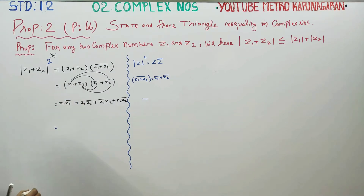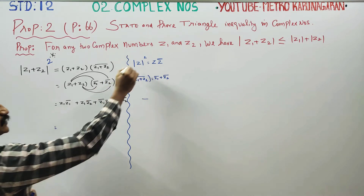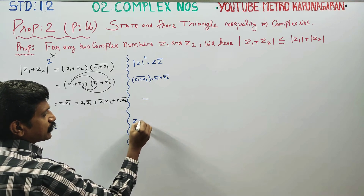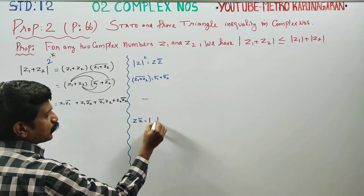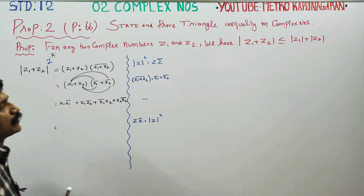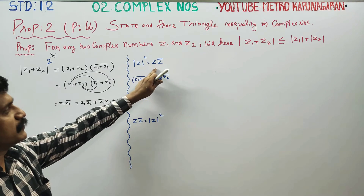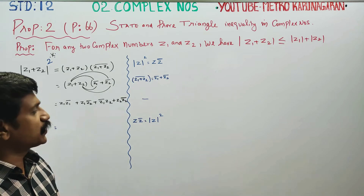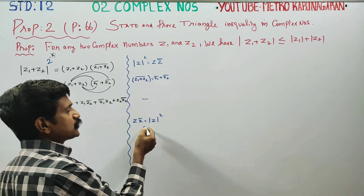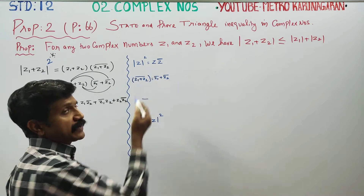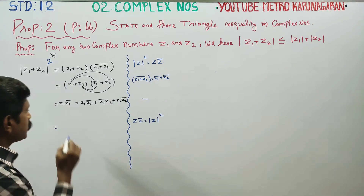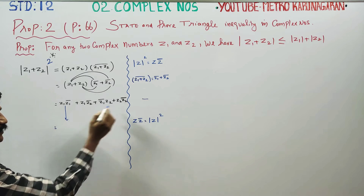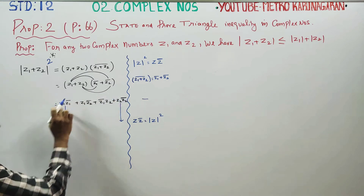Next step: one complex number multiplied by its conjugate gives modulus whole square. We use this property — modulus whole square. The property applied at this stage gives us modulus squared terms in the sum.